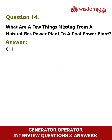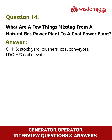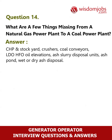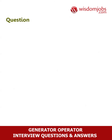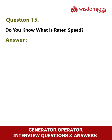Question 14: What are a few things missing from a natural gas power plant compared to a coal power plant? Answer: CHP and stock yard, crushers, coal conveyors, LDO, HFO oil elevations, ash slurry disposal units, ash pond, and wet or dry ash disposal.